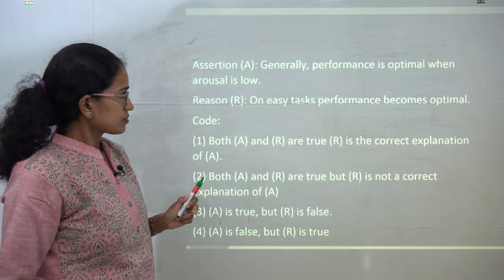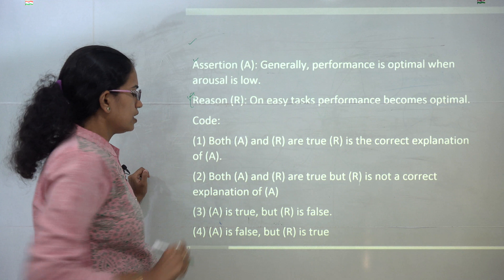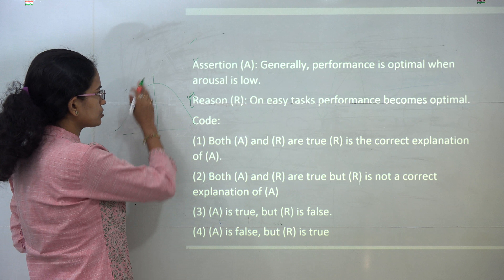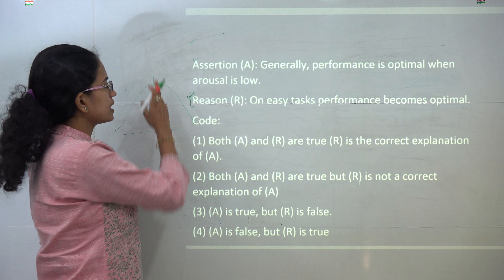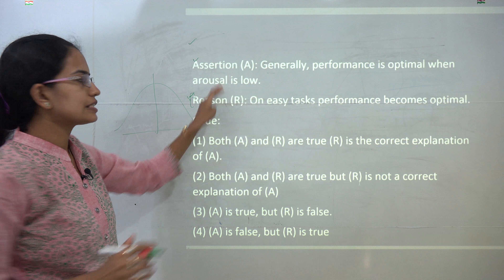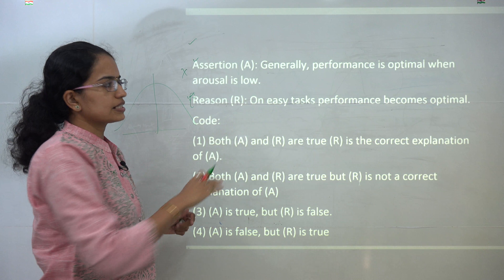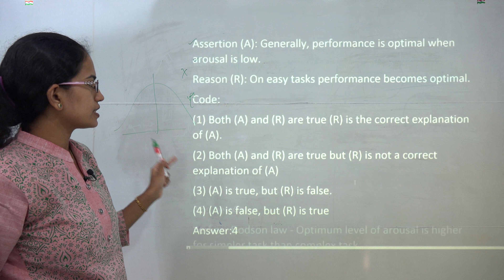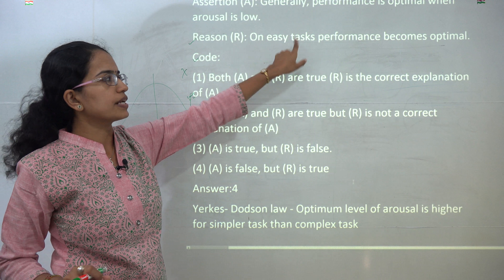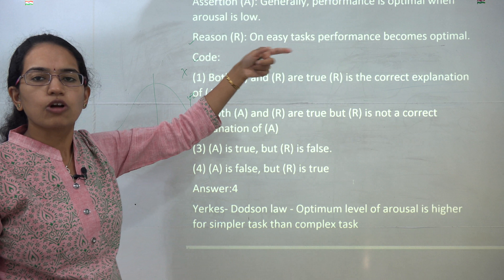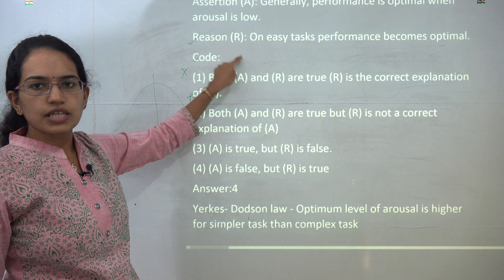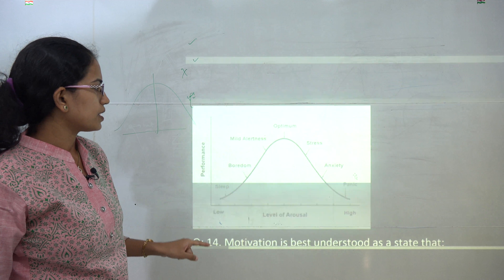The next assertion-reason question has a problem with the reason statement. This is essentially the Yerkes-Dodson law: maximum performance occurs at a moderate level of arousal. The statement 'performance is optimum when arousal is low' is incorrect. The alternate correct reason would be that the optimum level of arousal is higher for simpler tasks compared to complex tasks. However, as stated, the language of both statements is incorrect, so this should be treated as a bonus question.